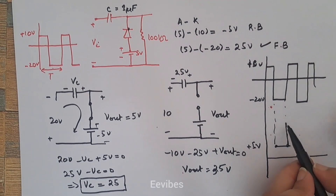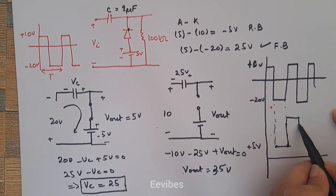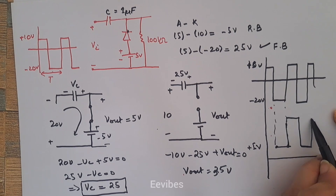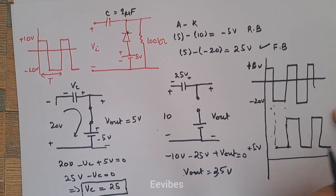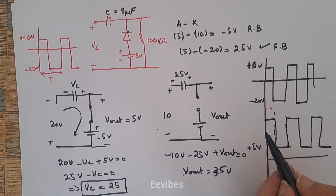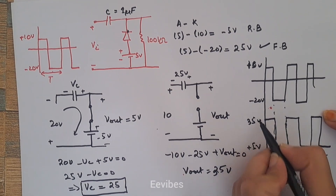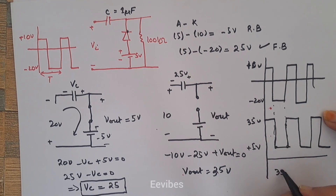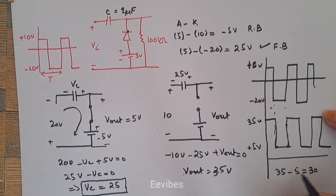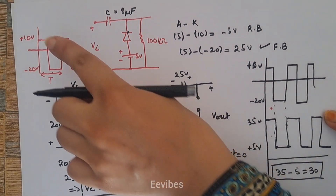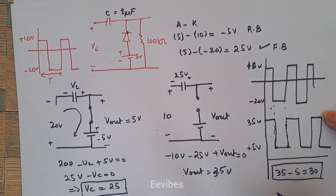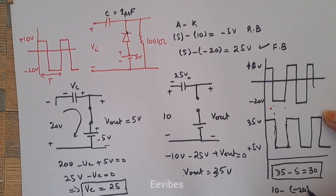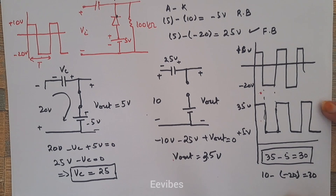When plus 10 volts is present at the input, we see plus 35 volts at the output. So the output waveform goes from plus 35 volts down to plus 5 volts. The peak-to-peak value is 35 minus 5 equals 30 volts, which is the same as the input peak-to-peak value: 10 minus (minus 20) equals 30 volts. The clamper circuit did not change the peak-to-peak value — it simply shifted the input voltage up by adding a DC reference level.